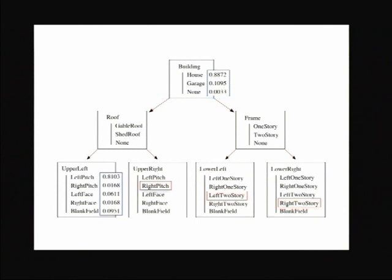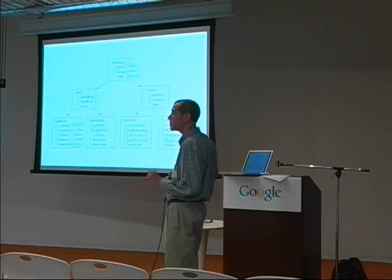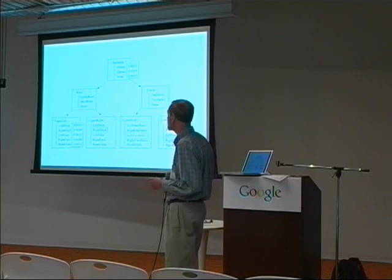Now we can add some evidence. We fill in the evidence for three of the quadrants and leave the other to float. The boxes shown in red correspond to instantiations of those random variables. As a consequence, the data percolates up — we see that the probability of there being a house is much higher. The priors and expectations also propagate down, giving a much higher probability of a left pitch. This demonstrates both bottom-up and top-down inference, and an example of pattern completion where shown a portion of the pattern, it fills in the others.